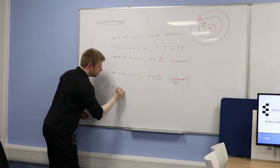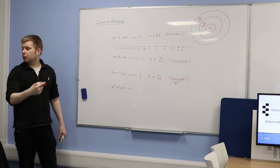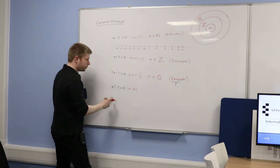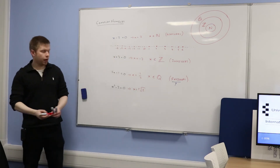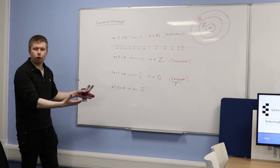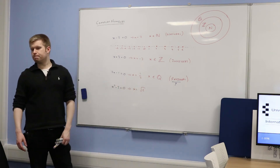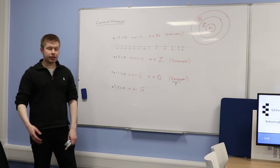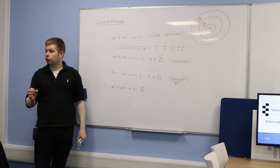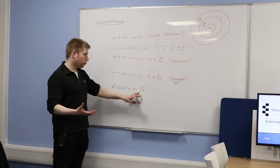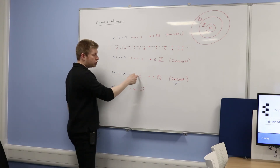What if I gave you the equation x squared minus 2 equals 0? The solution would be x equals plus or minus root 2. I'll just consider the positive version, root 2. Now, is this rational? No, it's not. This was actually quite famous — a guy called Hippasus, a member of Pythagoras' school, proved that root 2 was irrational.